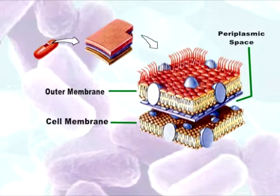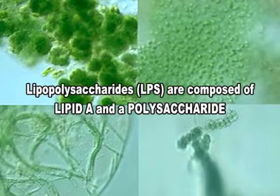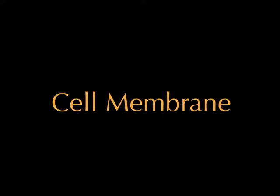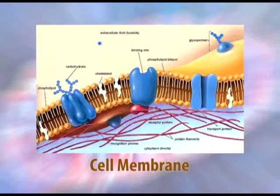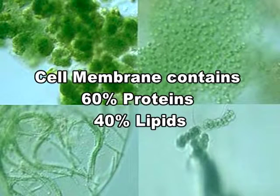Lipopolysaccharides (LPS), also called endotoxins, are present on the walls of gram-negative bacteria. They are composed of lipid A and a polysaccharide. These endotoxins are sometimes called pyrogens because they are causatives of general fever. Their function relates to their toxicity — they are toxic to mice, pigs, humans, and other hosts. The cell membrane is composed of a lipid bilayer with proteins and is a selectively permeable, flexible, and dynamic membrane.